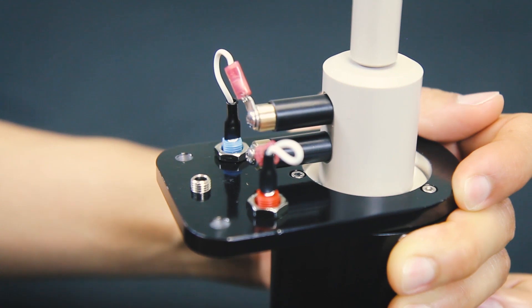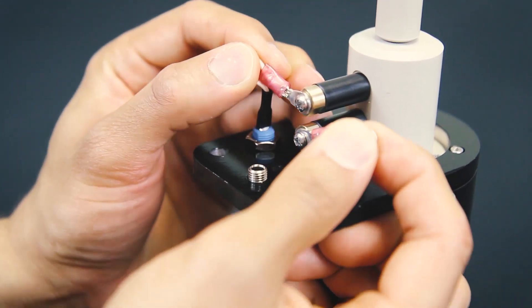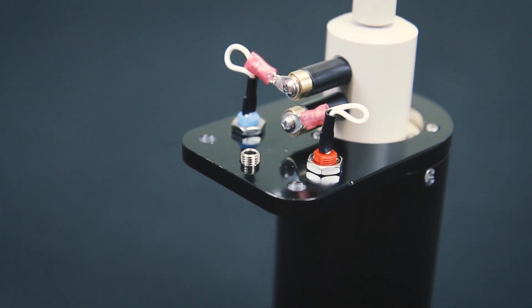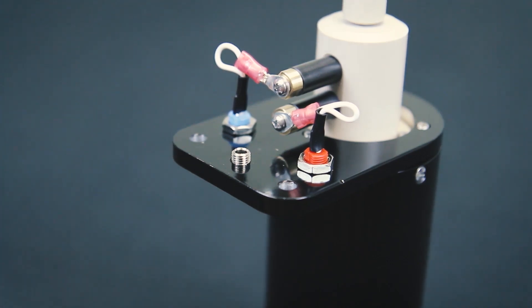Make sure the crimp is in the same orientation as it was at the beginning of this video, where the long side of the ring electrode crimp is perpendicular to the length of the shaft. Otherwise, it won't fit into the lift bracket.